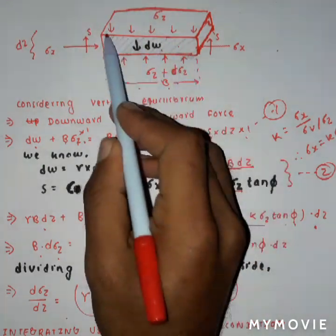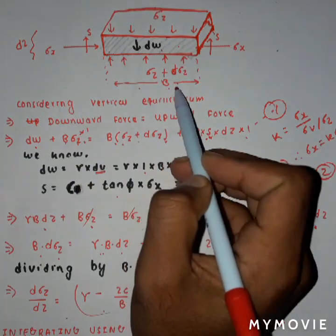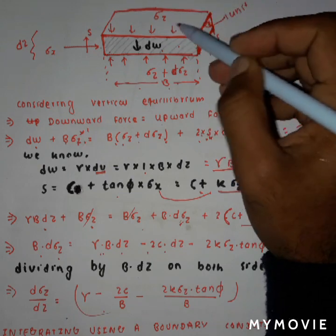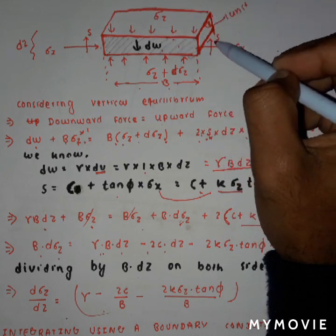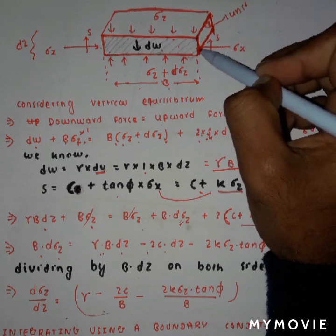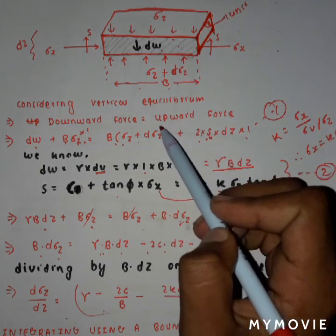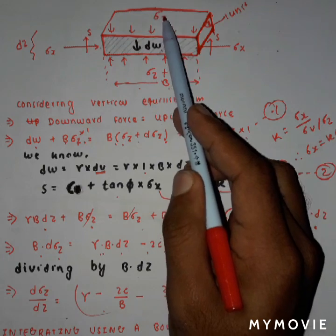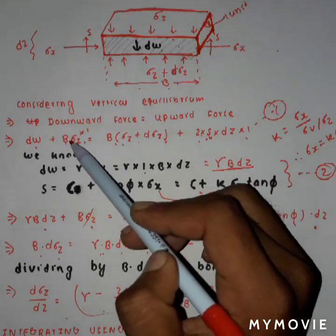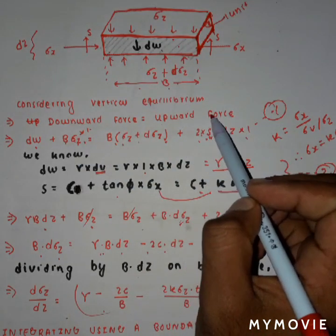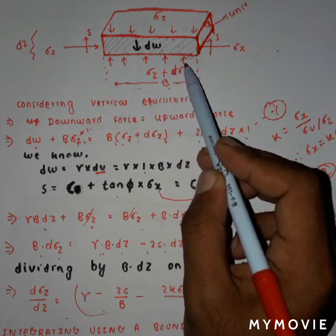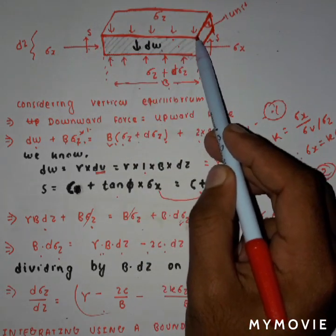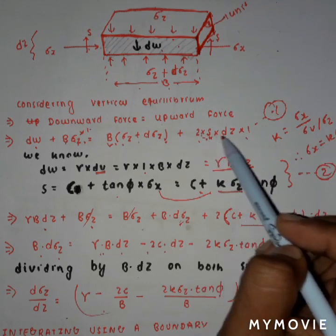Let the width of this strip be denoted by b, and let the unit dimension into the page be 1. So σz is acting on area b×1, and the shear stress s is acting on area 1×dz×1. For vertical equilibrium, the total downward force must equal the upward force. The downward force is the weight dw plus σz × b×1. This equals the upward force: (σz + dσz) × b×1 plus 2s acting on area dz×1.